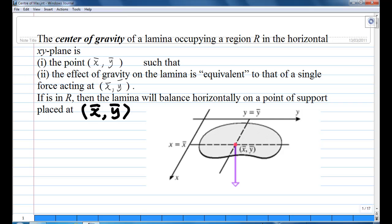The center of gravity of a lamina of a region R in the xy plane is a point x̄, ȳ such that the gravity on the lamina is equivalent to a single force acting at the point x̄, ȳ.